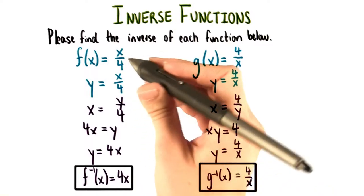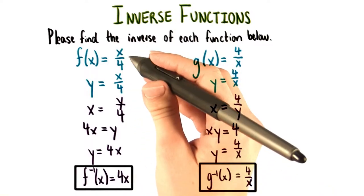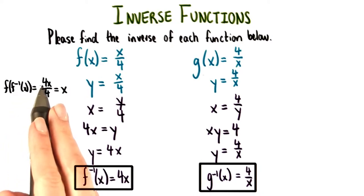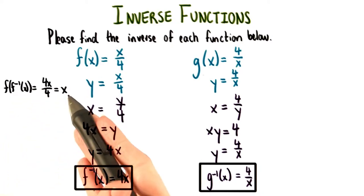This makes perfect sense. f is dividing x by 4, and f inverse is multiplying it by 4. Checking our work, f of f inverse of x equals 4x over 4, which is just x.